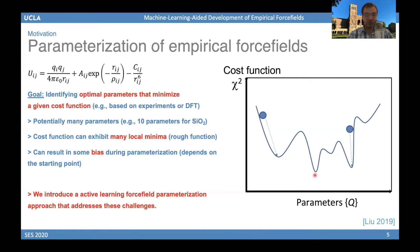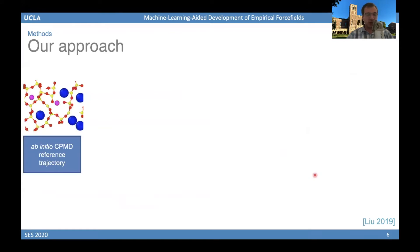What I would like to present is an active learning parameterization method that can be used to efficiently parameterize force fields — finding the optimal values of those parameters while addressing the limitations associated with traditional optimization methods.